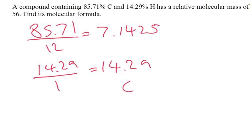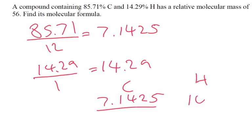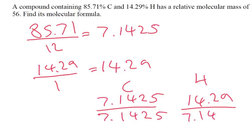So carbon is 7.1425 and hydrogen is 14.29. Divide by the smallest, which is carbon. Carbon divided by itself gives 1. Then 14.29 divided by 7.1425 gives us 2. So the empirical formula is CH2.